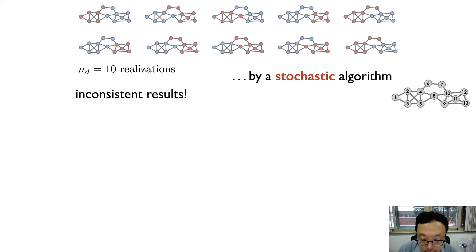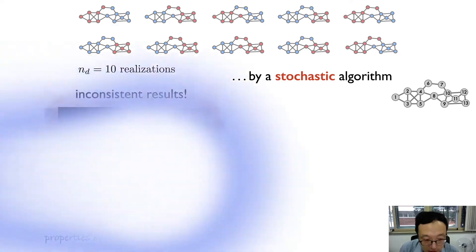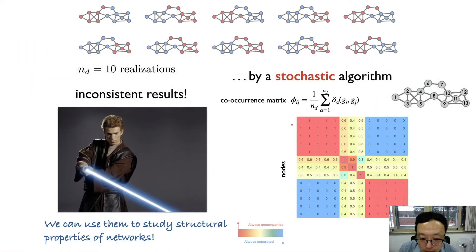But here's our first key question: is it always a bad or evil thing to have this kind of inconsistent result from stochastic algorithms? It turns out that we can actually use these different results for each realization as features, instead of treating them as bugs, to investigate the network structure. If you look at this co-occurrence matrix representing the fraction of node pairs that belong to the same community, it's either 1 or 0 for a very clearly cut community structure.